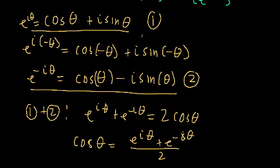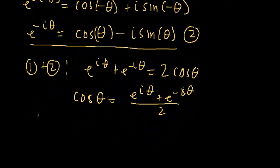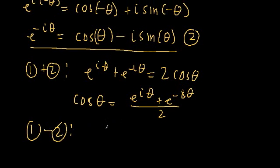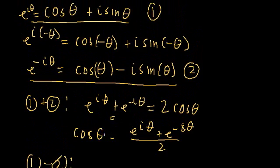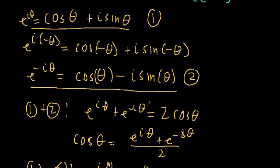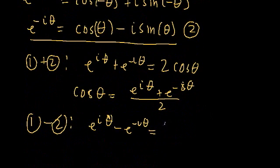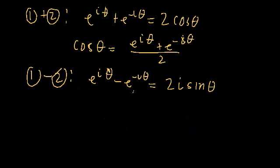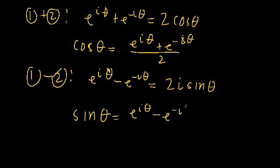We can use a similar approach to isolate sine theta by subtracting equation 2 from equation 1. Subtracting the left-hand sides gives e to the i theta minus e to the negative i theta. The right-hand sides give cosine theta plus i sine theta minus cosine theta minus negative i sine theta, leaving just 2i sine theta. Dividing by 2i, we get that sine theta equals e to the i theta minus e to the negative i theta, all over 2i.